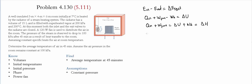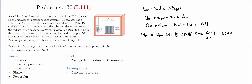The heat into the room was previously calculated as the heat lost by the radiator. The fan work is calculated as power multiplied by time: 0.120 kW times 45 minutes, converted using 60 seconds per minute, giving W_fan = 324 kJ.